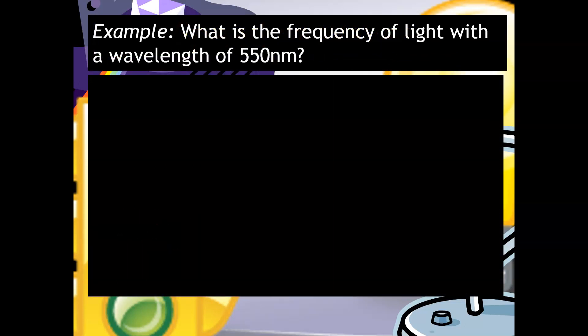So here's an example of a type of calculation that you would need to perform. What is the frequency of light with a wavelength of 550 nanometers? So the first thing is to identify what formula you're using. So we're obviously going to be using the speed of light equation. And so that 2.998 comes right from the speed of light constant. So that's just something that you need to either memorize or your teacher would give you.